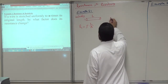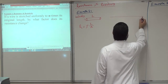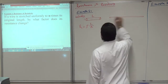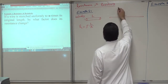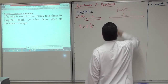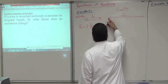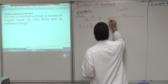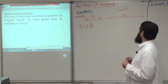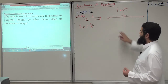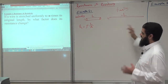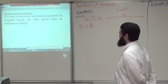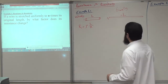We stretch this wire to n times its original length, so now it is nL. But what happened to its area? The area gets smaller. Let's call this A_final. We will find the final resistance and compare it to the initial resistance — that's what 'by what factor does resistance change' means.